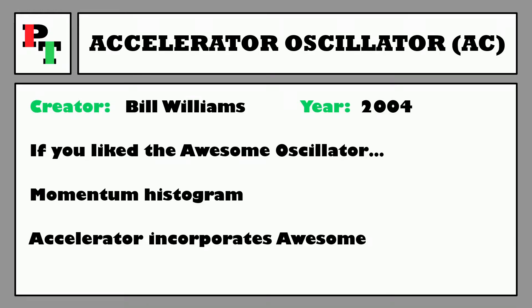That's right — Bill Williams layering his old indicators into his new indicators so that he is able to maximise their marketing potential and minimise the mathematical thought process. Let's take a look at the formula of the Accelerator Oscillator.